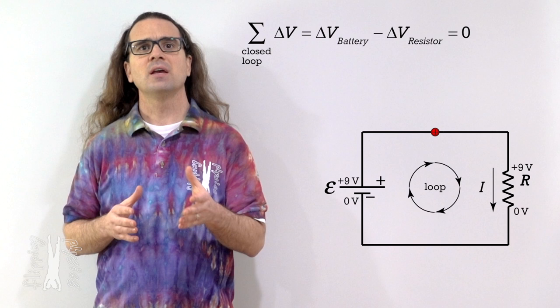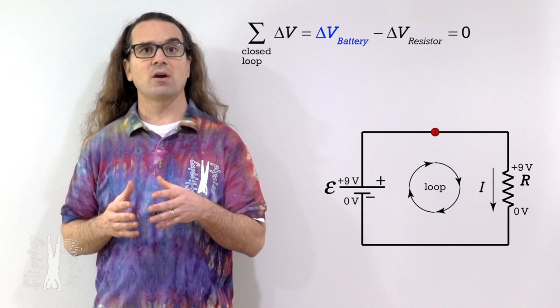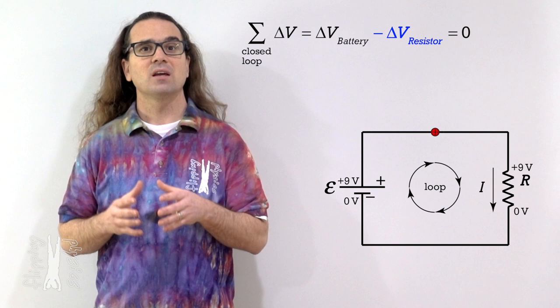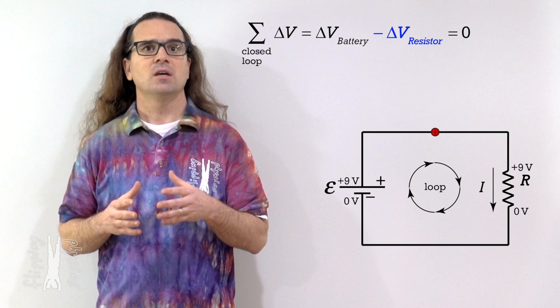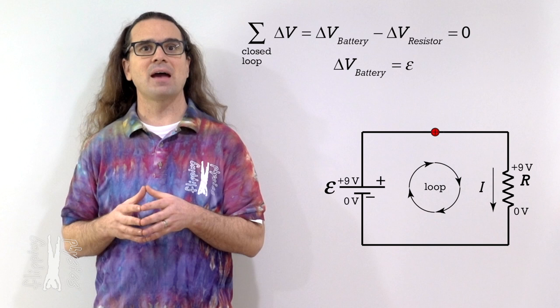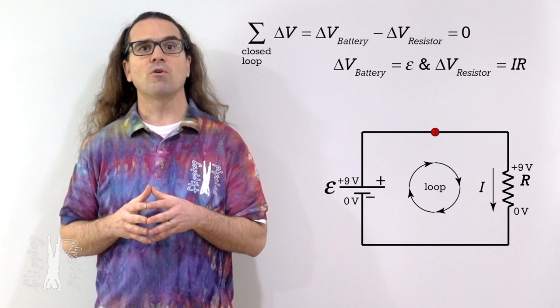When we go in the direction of the loop across the resistor, the electric potential goes down. Therefore, in our loop equation, the electric potential difference across the resistor is negative. We know the electric potential difference across the battery equals the electromotive force, or EMF of the battery, and the electric potential difference across the resistor equals current times resistance. Therefore, we can determine the current in the circuit in terms of the EMF of the battery and the resistance of the resistor.